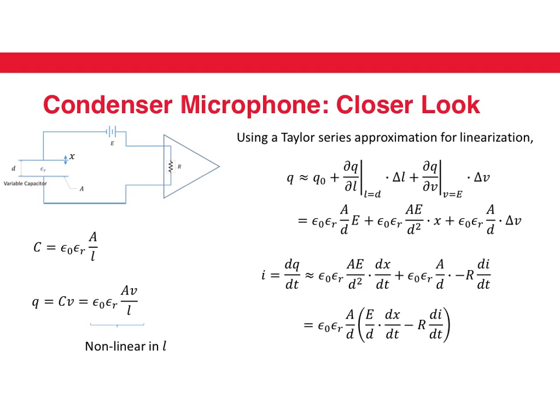One way of linearizing this equation would be using the Taylor series approximation, and the first two terms for a Taylor series approximation are given in this equation here. So if you write Q naught, Q naught is basically the charge on the capacitor, and we write that equation for the stationary position. In that case, the distance between the plates of the capacitor is T.